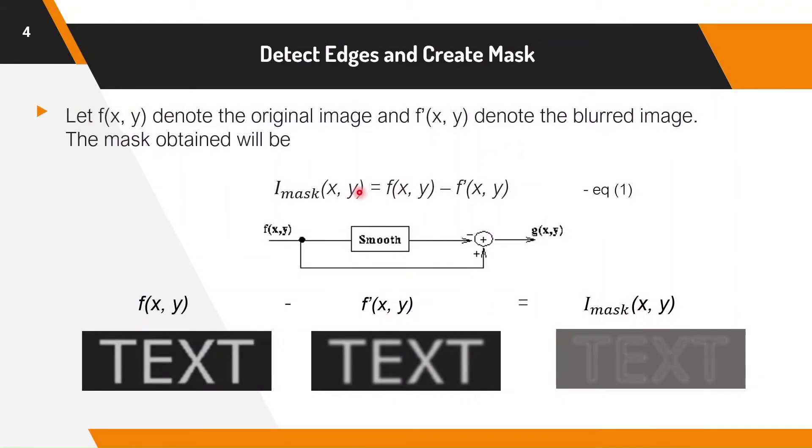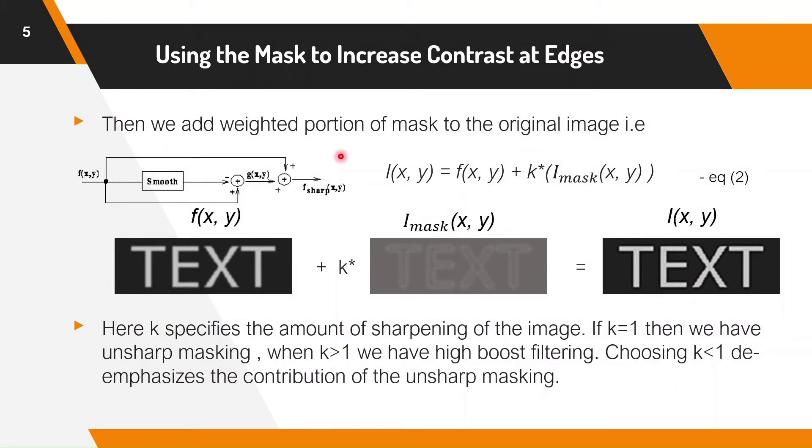Let f be the original image. Now we perform spatial low pass filtering to produce the smoothed version of the image, which is then pixel subtracted from the original image in order to produce a description of image edges, that is the mask. The mask contains the information regarding the edges of the text. Now we add a weighted portion of the mask to the original image. The resultant image is more sharpened than the original image. Here k specifies the amount of sharpening of the image.